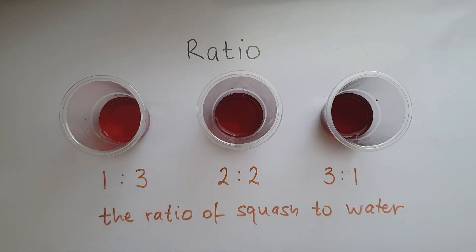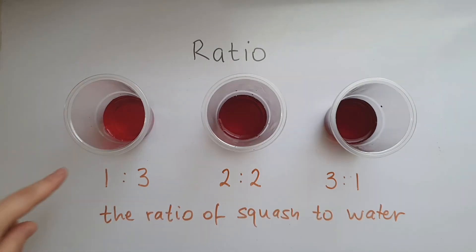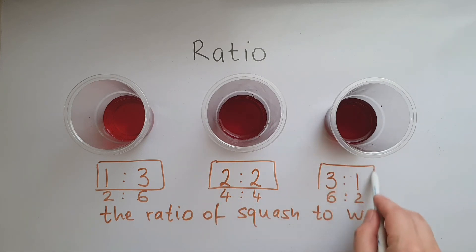If I doubled the amount of squash and water in these cups—so two spoonfuls of squash and six of water, four and four, and six and two—the ratio would still be the same: one to three for this cup, two to two for this cup, and three to one for this cup.